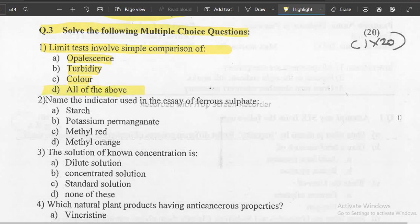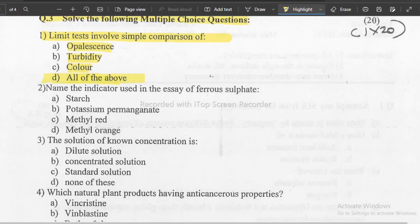Next question: Name the indicator used in the assay of ferrous sulfate. The answer options are starch, potassium permanganate, methyl orange or methyl red. The correct answer is B, that is potassium permanganate.